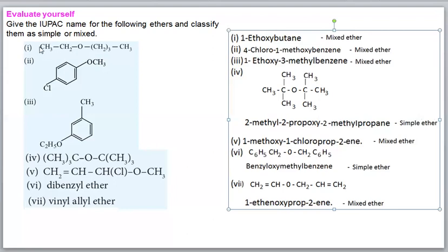For the IUPAC name of compound 1: the smaller alkyl group is ethyl (ethoxy), the larger is butane with 4 carbons in a straight chain. The oxygen is at carbon 1, so the name is 1-ethoxybutane.